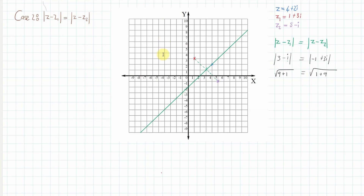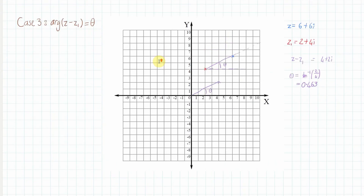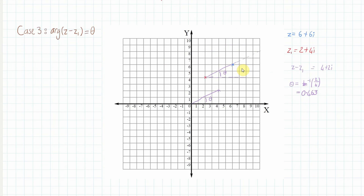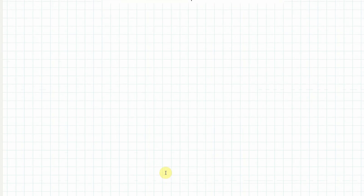The final case, case three: if we know that arg(z − z₁) = θ, where z₁ is known and z isn't, we draw a horizontal line parallel to the real axis from z₁ and measure angle θ from that line. We then draw a ray and z must lie somewhere on it. In this example, z = 6 + 6i lies at 0.463 radians from z₁. Those are our three cases — let's try some textbook examples.